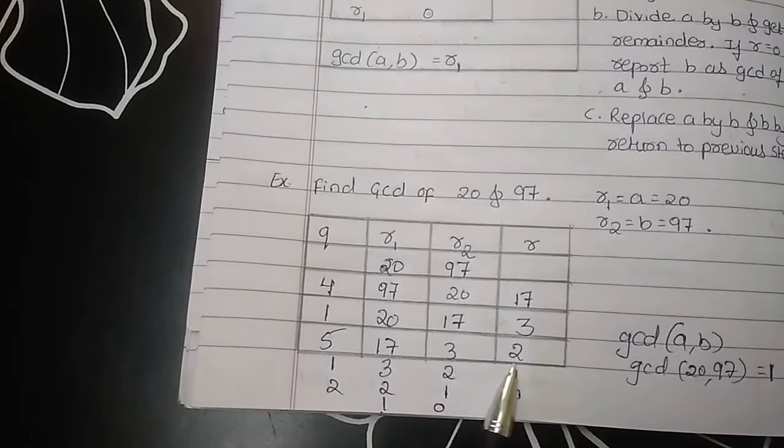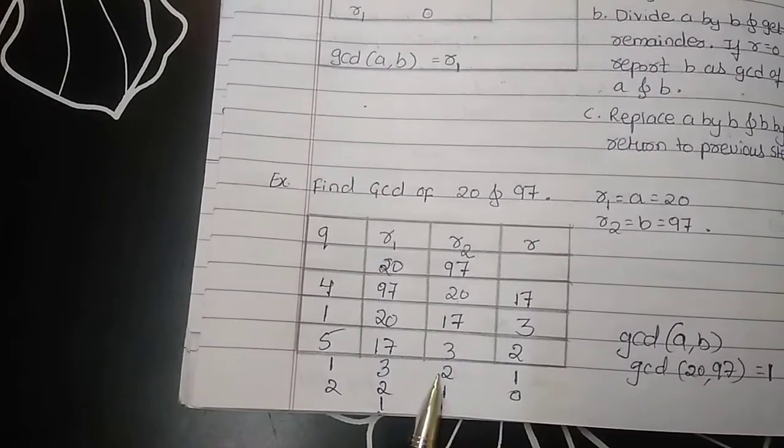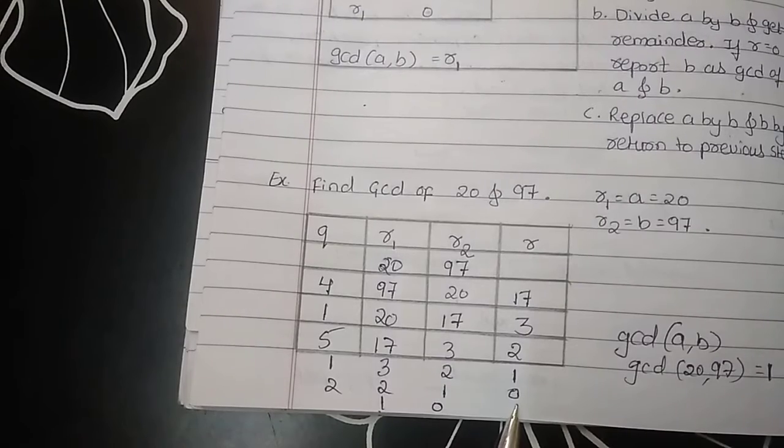Then, 3, 5 of 15, remainder will be 2. This process is repeated until and unless we are getting the remainder as 0.